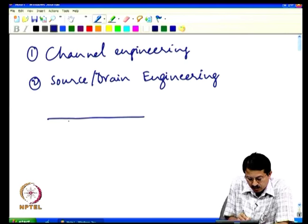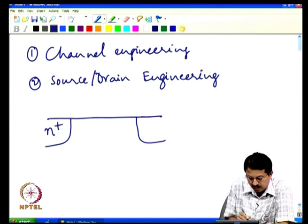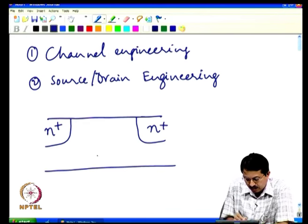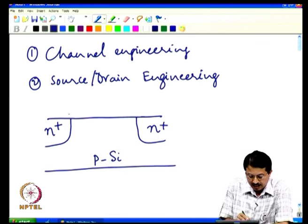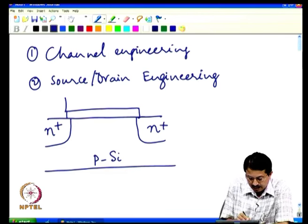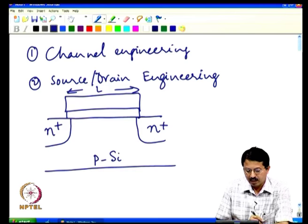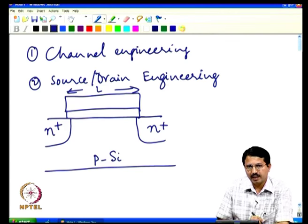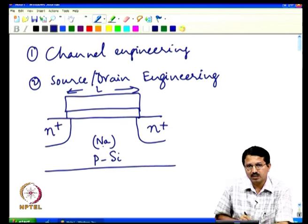Based on our discussion so far, it has become clear that if we want to design a very small geometry transistor — in this case an n-channel transistor — as the scaling guidelines suggest, when we start decreasing the channel length, the question is how do we engineer the silicon in this region.